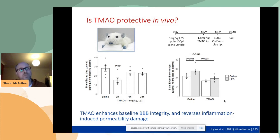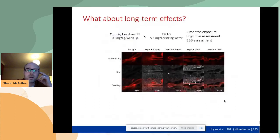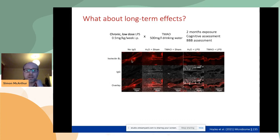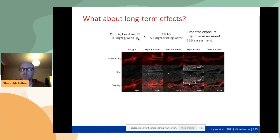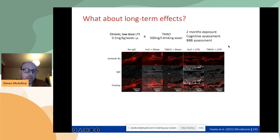This is an acute model — you don't classically get exposed to acute bolus doses of TMAO in real life. So we asked what happens with a more chronic, dietary-type administration. We switched to a model where TMAO was given in the drinking water over a two-month period, so mice are continuously exposed. We combined this with a model of subchronic, low-level inflammation that doesn't cause an acute inflammatory response visible in behavior or immune cell phenotype, but does have effects on cognition.